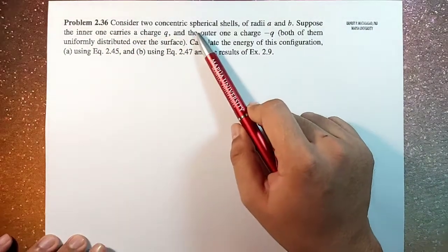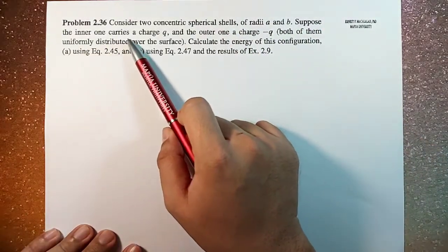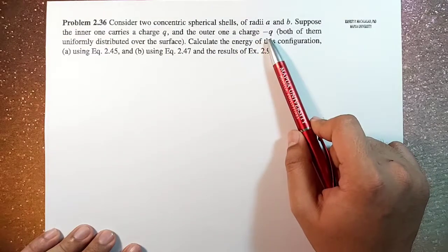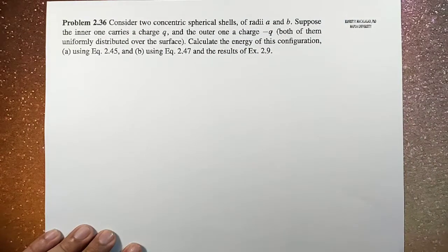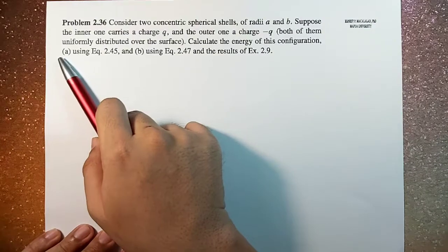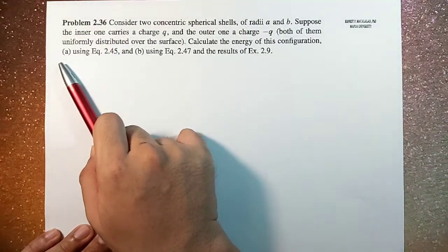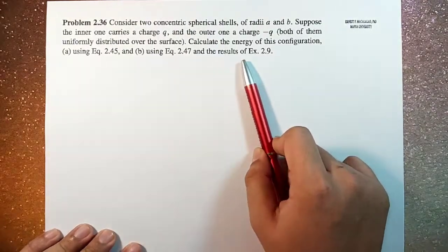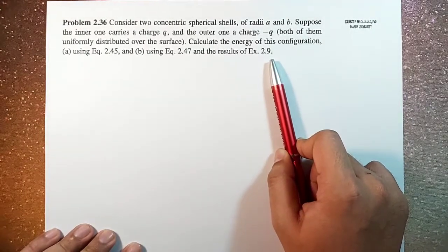Consider two concentric spherical shells of radii A and B. Suppose that the inner one carries a charge Q and the outer one carries a charge negative Q. Both of them are uniformly distributed over the surface. Calculate the energy of this configuration. We already did equation number 2.45, that's letter A in the previous video. And this time we're going to use equation 2.47 and the results of example 2.9.